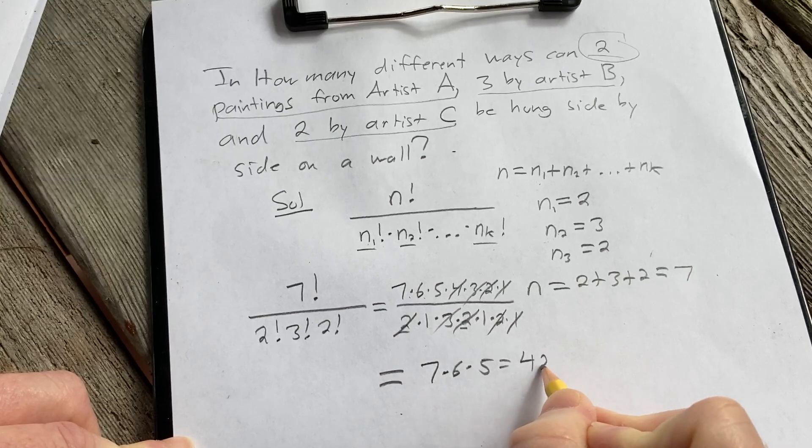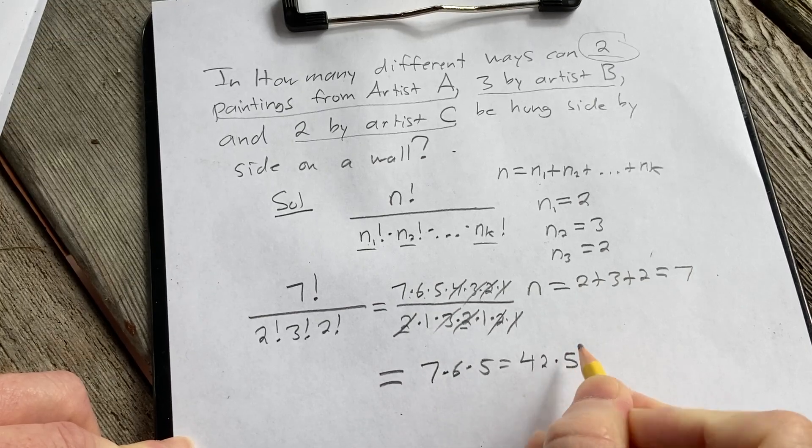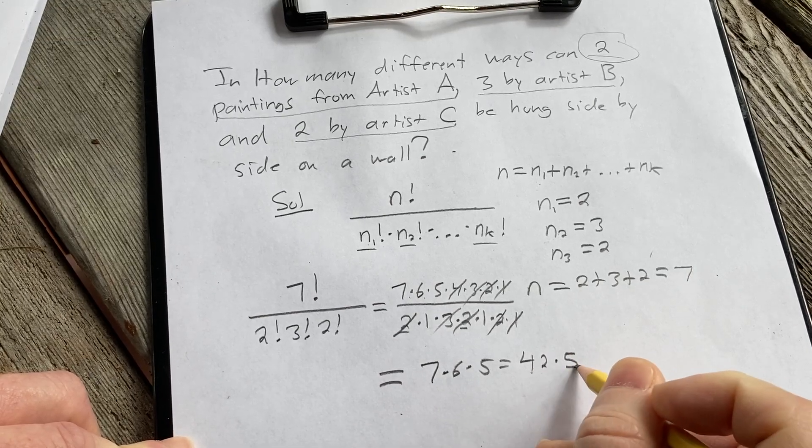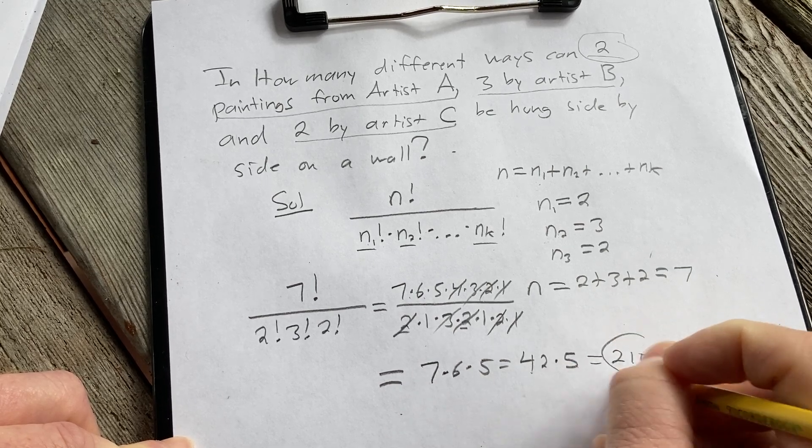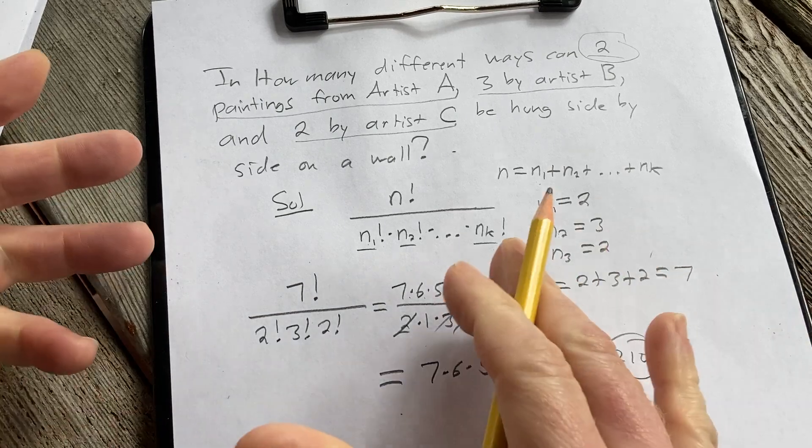Which is 42 times 5. Okay. And 40 times 5 is 200, 5 times 2 is 10. So it's equal to 210 ways to hang these paintings on a wall.